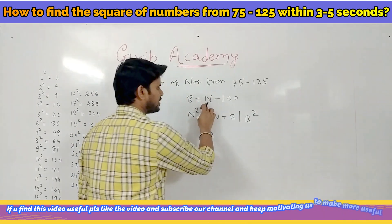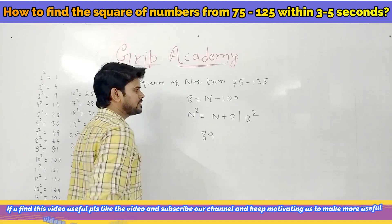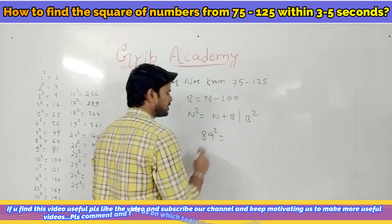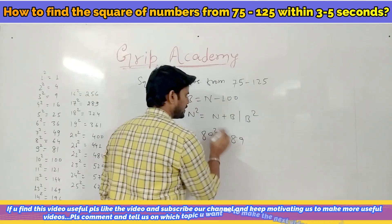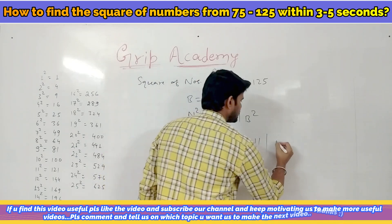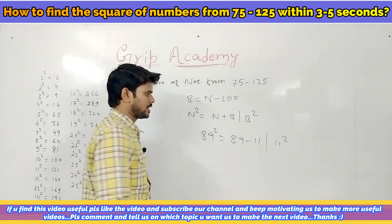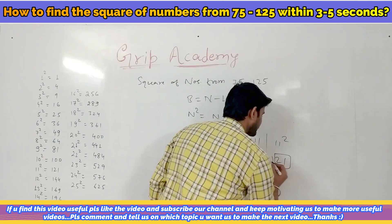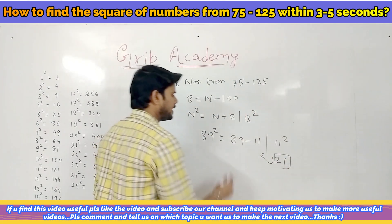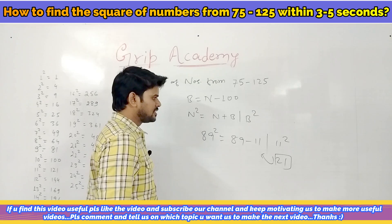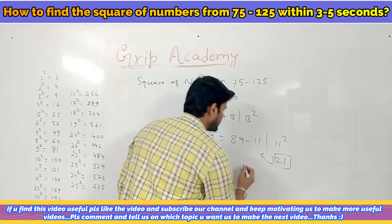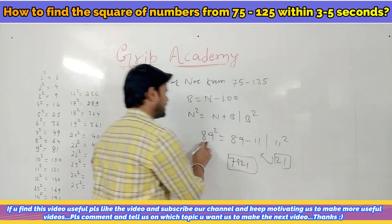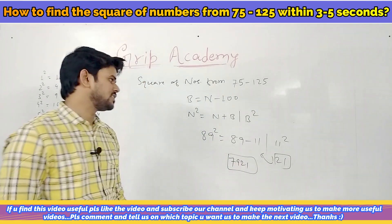Let's find the square of 89. Base is 89 minus 100 equals minus 11. So 89 squared equals 89 minus 11, slash 11 squared. 11 squared is 121, so 21 stays here and 1 is carry. 89 minus 11 is 78, plus carry 1 is 79. So the answer is 7921.